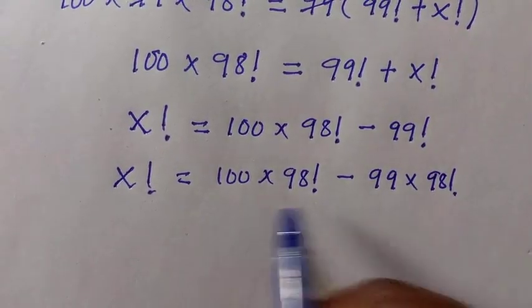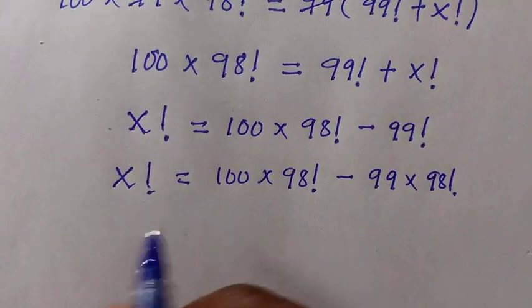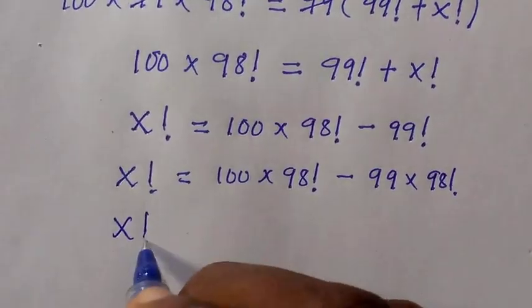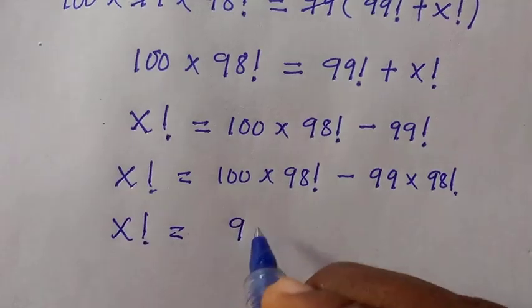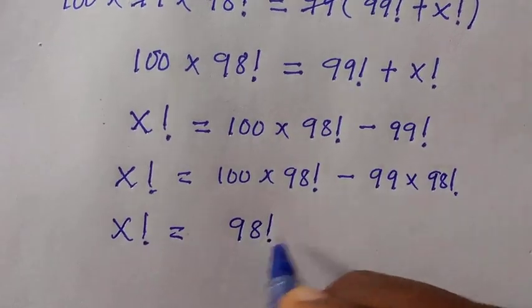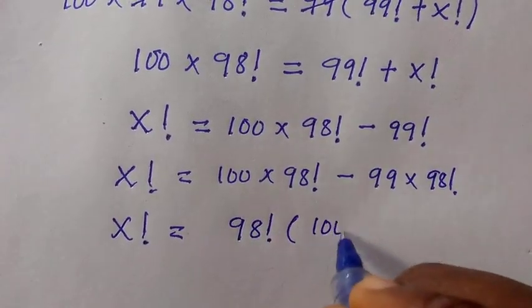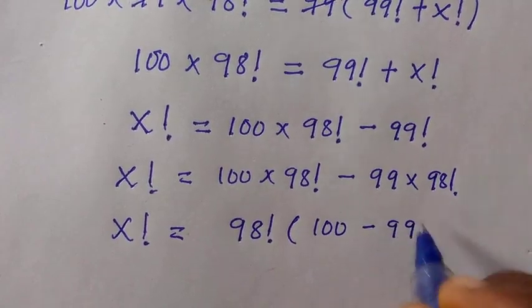We factor out 98 factorial. Here we have x factorial equals, taking out 98 factorial, we are going to have 100 minus 99.